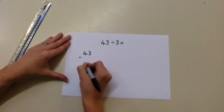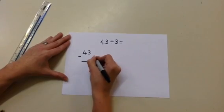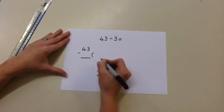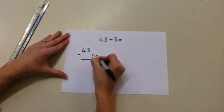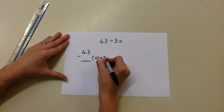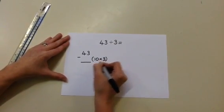So we're going to do a subtraction sum and use our understanding of the 3 times table to help us. We know that 10 groups of 3 are 30, and 30 can be taken away from 43.